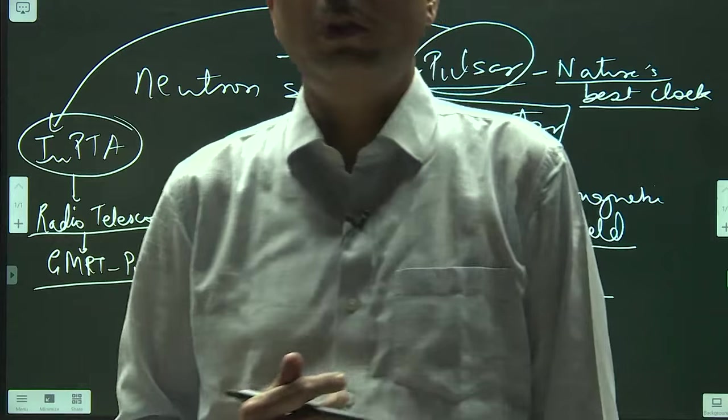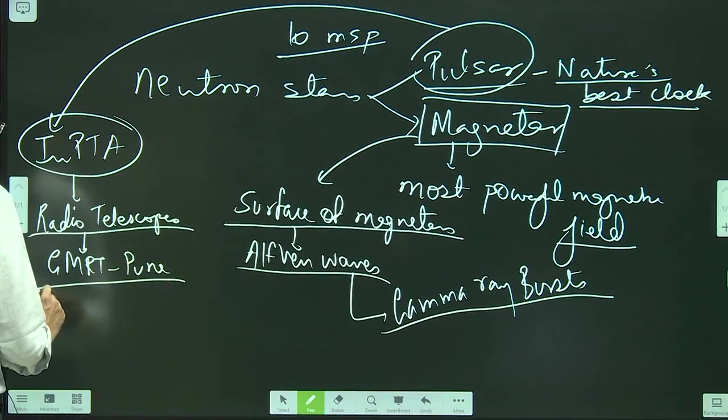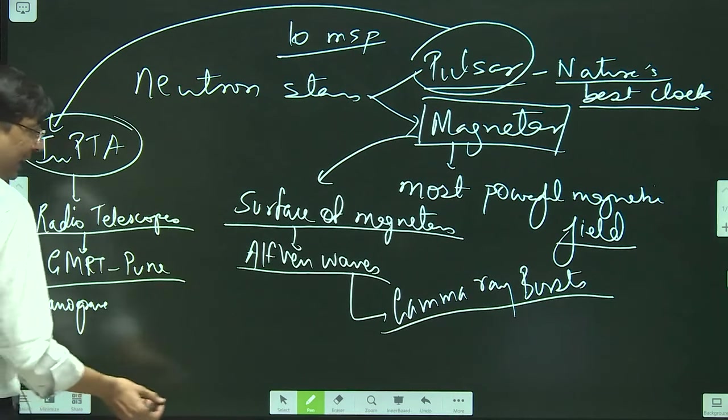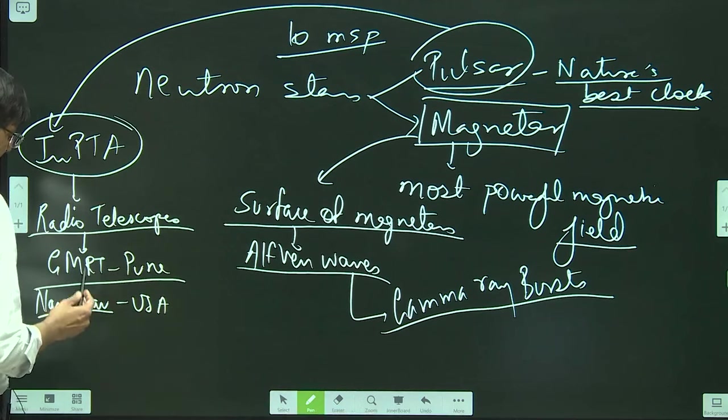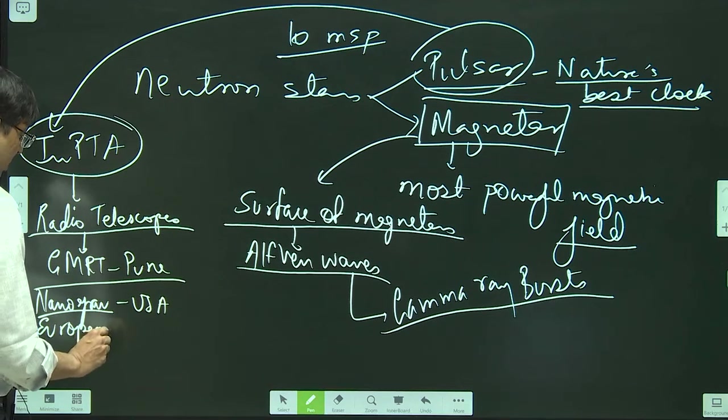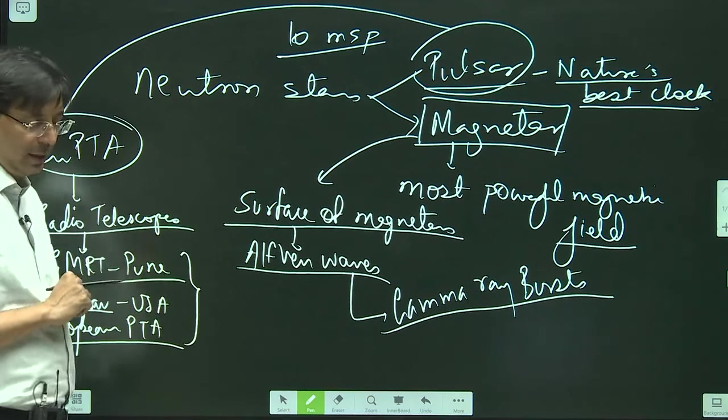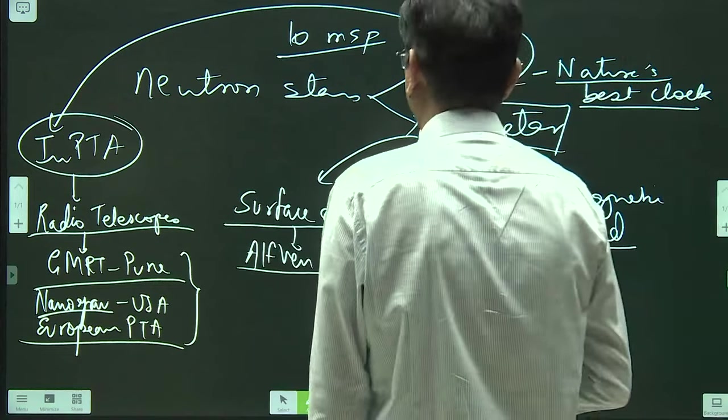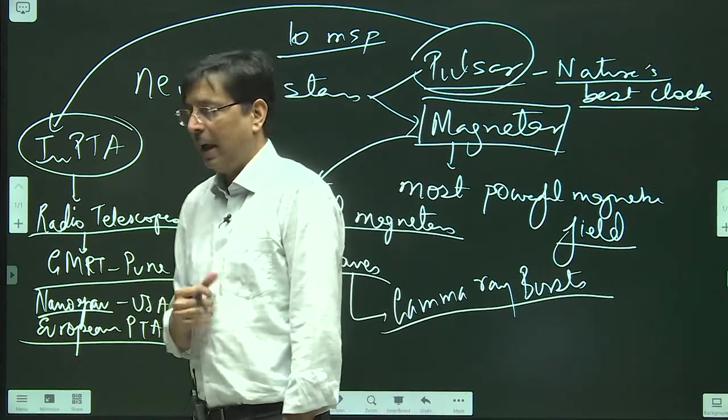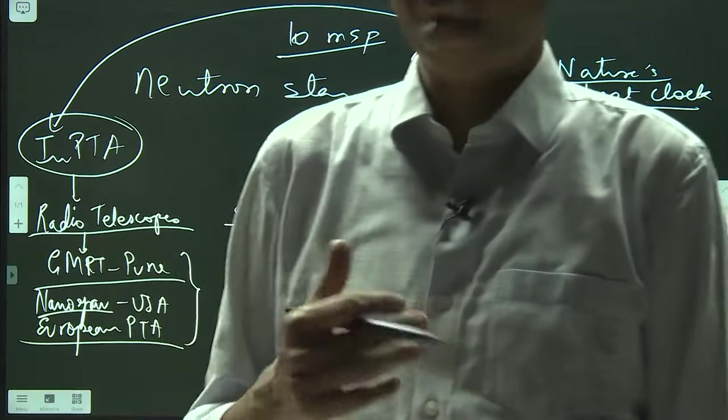This GMRT, along with the Parkes Telescope in Australia, then Nanograv of USA, and European PTA. Besides that, there was Chinese and Japanese also. They have confirmed that there is a continuous hum sound in the universe, and that continuous hum sound in the universe is because of gravitational waves which are of extreme low frequency.